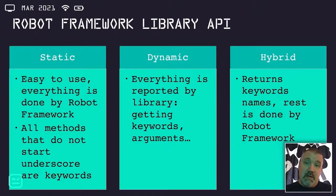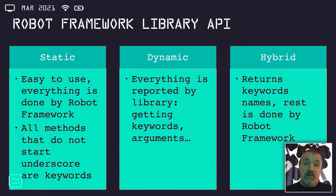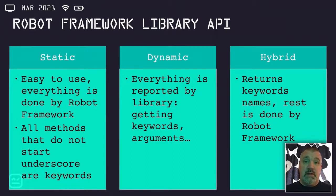Then there's the dynamic library API, which is at the far other end. Robot Framework just imports the library and then calls specific API methods out of your library to discover the keywords, to run your keywords, get the keyword documentation, and so on — the same stuff it does in the static library API, but instead of discovering, it calls methods out of your library. And then there's the third one, which is the hybrid library API, more in the middle. It has one API method — get keyword names — meaning the library returns the keyword names, but Robot Framework does everything else: running, arguments, documentation, and so on.